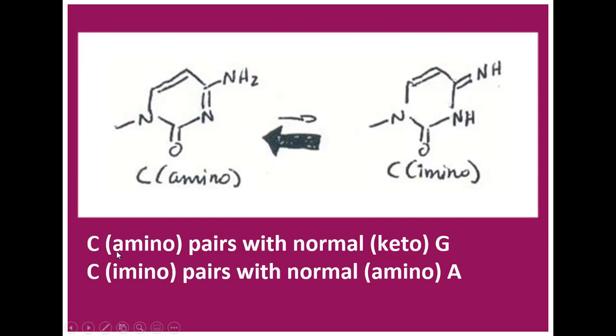And cytosine in amino form pairs with normal keto form guanine, which is usual. And cytosine in amino form pairs with normal amino adenine, which is unusual.